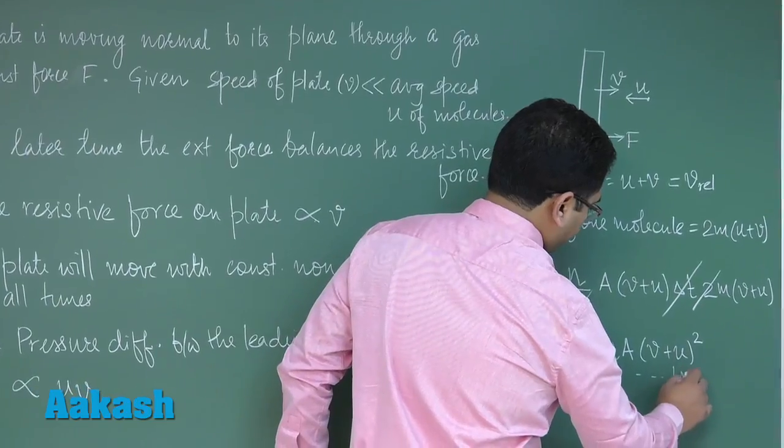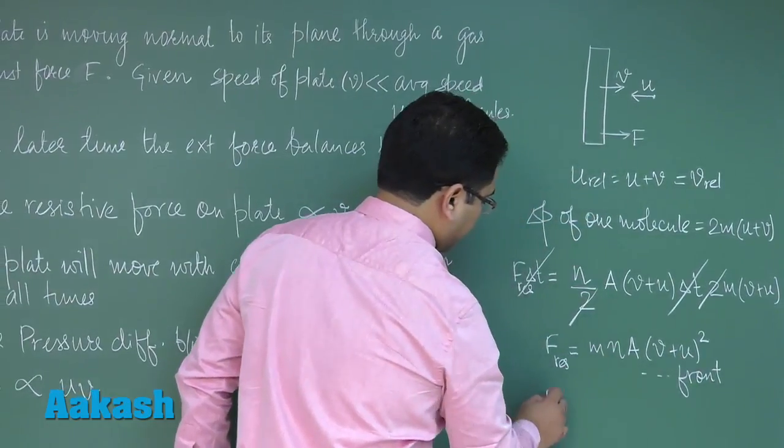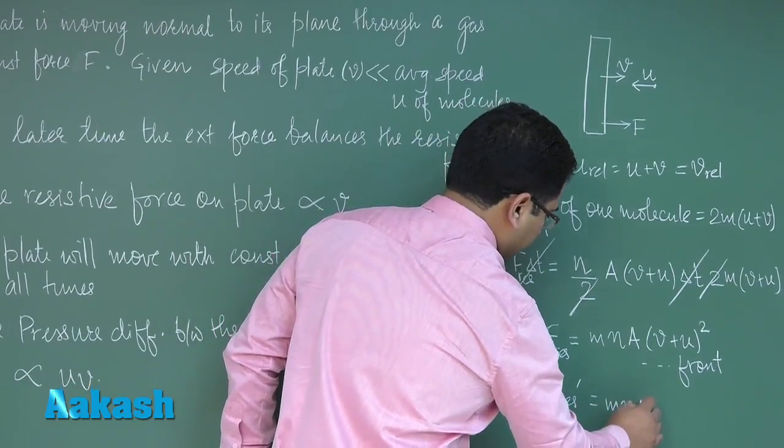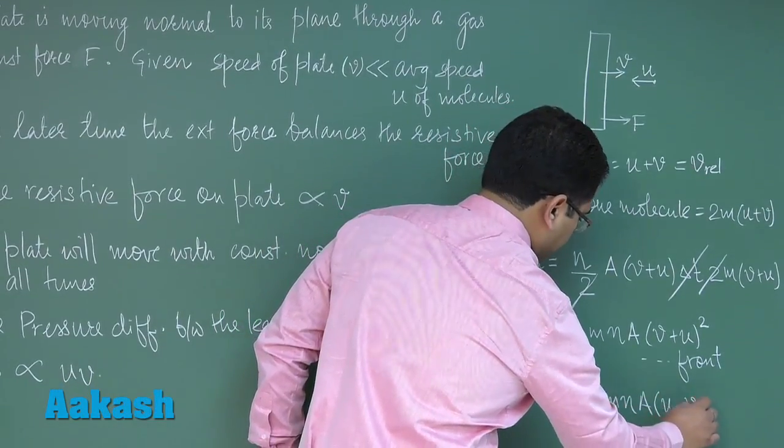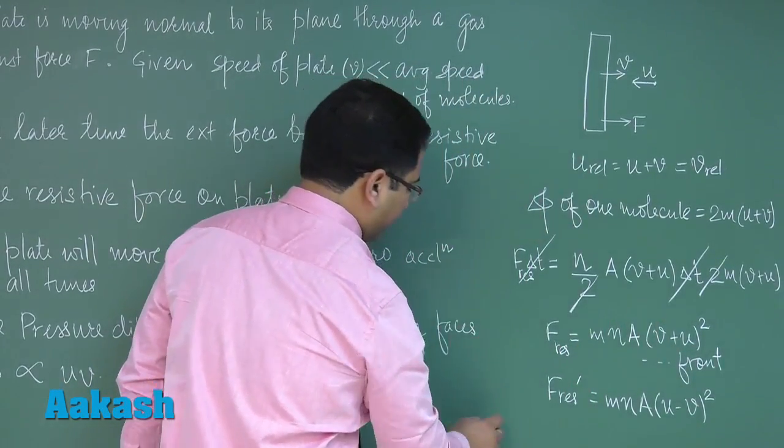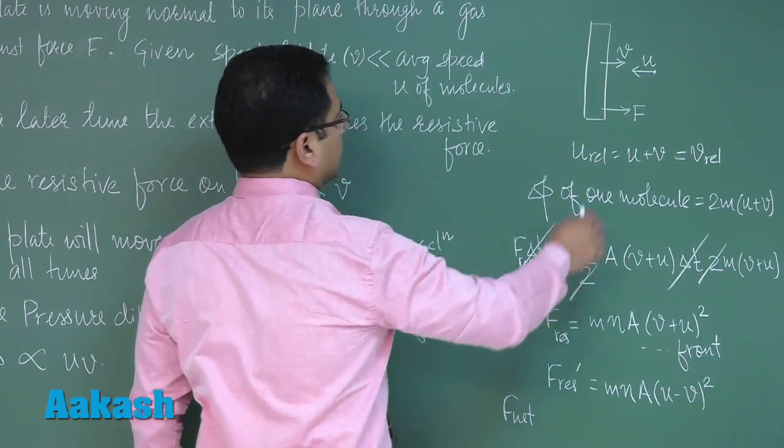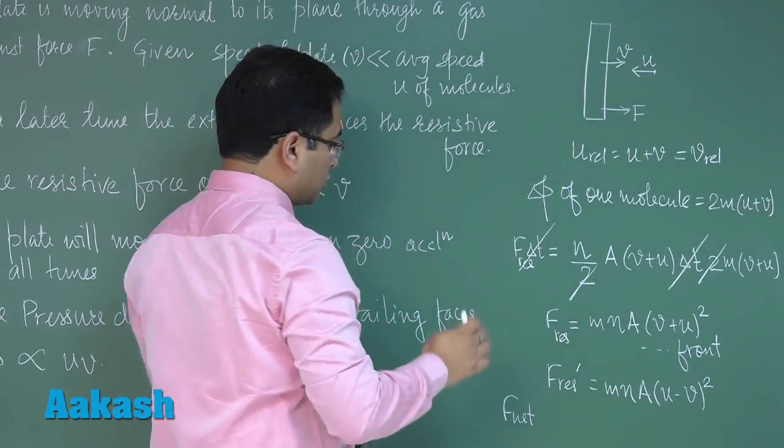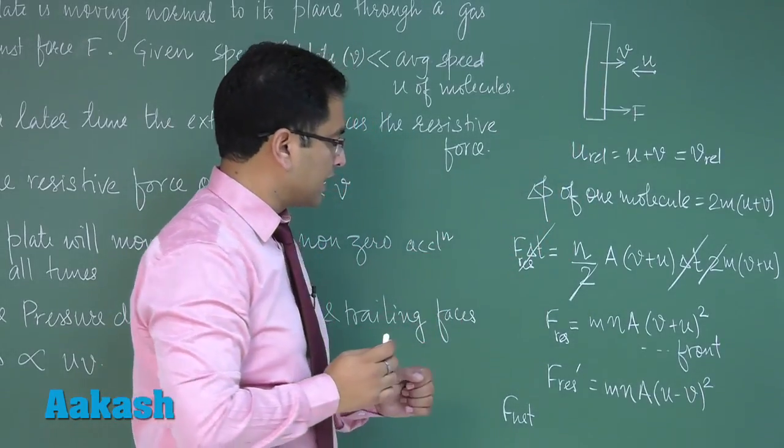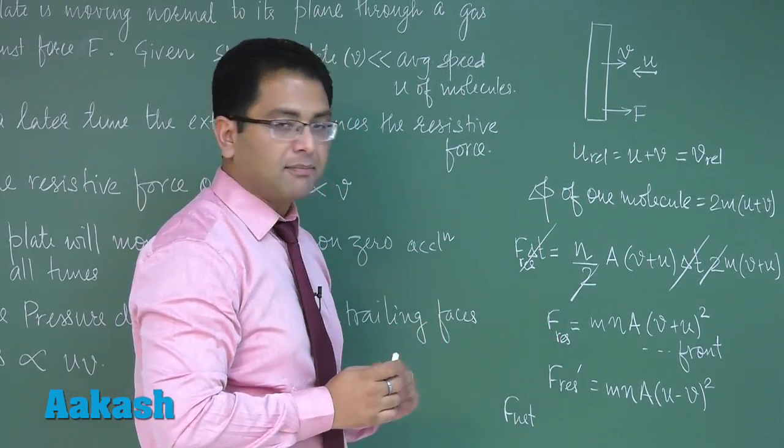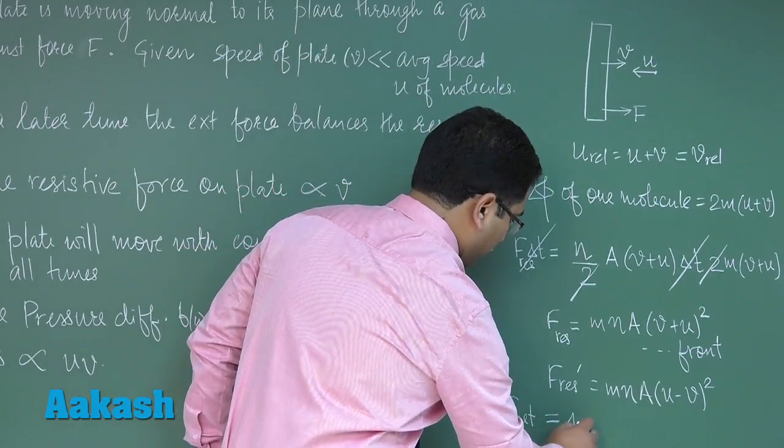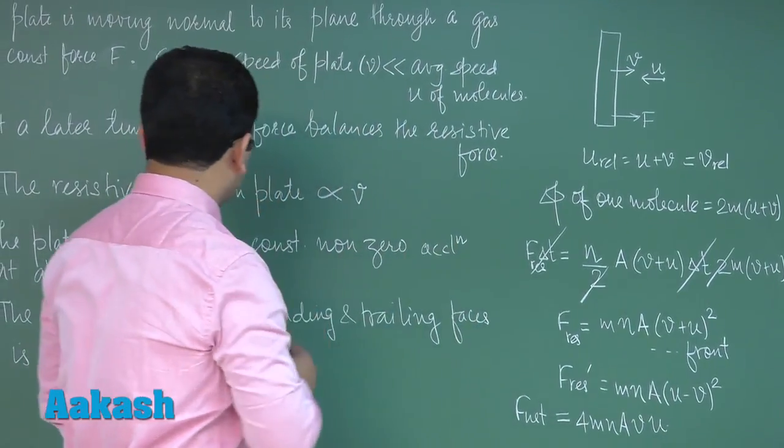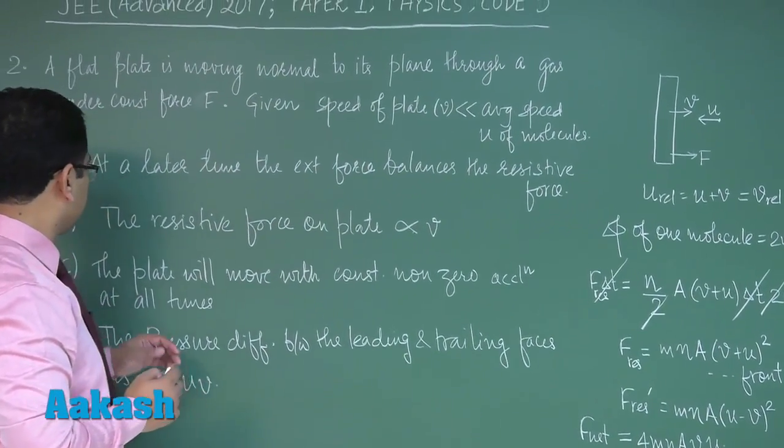Similarly, on the back side, the resistive force would be mnA(U - V) whole square. Now we can find the net force. Of course the front would be exerting resistive force in this direction, back in this direction. The net resistive force would be front minus back, and that would of course be 4mnAVU.